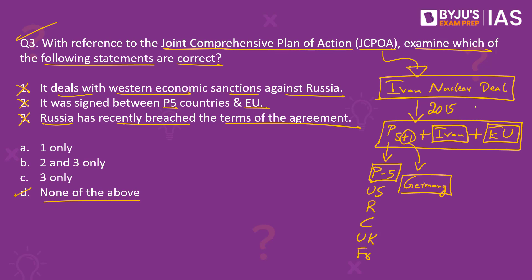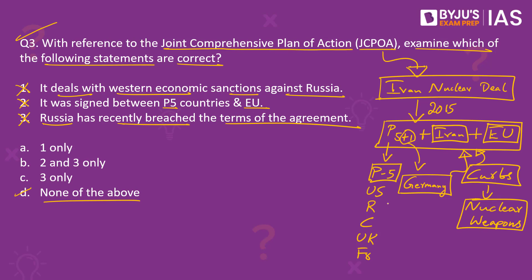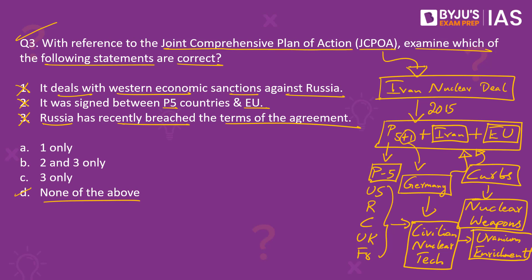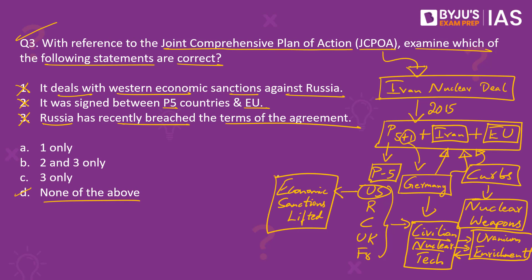This historic deal provided for placing curbs on Iran's nuclear weapons programme. In return for Iran accepting these restrictions, Iran would be aided by other countries — particularly the European countries — in developing civilian nuclear technology. Iran agreed to limit its uranium enrichment programme and to transfer its enriched uranium stockpile to European countries, which would in turn provide civilian nuclear technology to Iran. In return, the United States agreed to lift the crippling economic sanctions it had imposed on Iran to target its nuclear weapons programme. The deal helped reduce tensions between the US and Iran and was being successfully implemented until 2018.